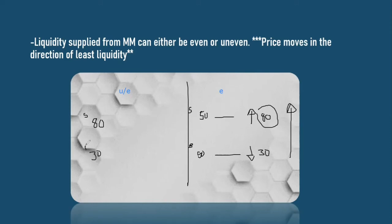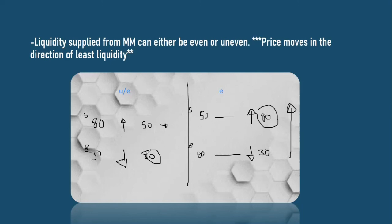Now let's flip it. Here we want to buy because there's available sell-side liquidity, and here we want to sell because there's available buy-side liquidity — 50 million on each side. The market orders from buyers worth 50 million can be easily absorbed, so price remains where it was. But the 50 million from sellers exceeds the available liquidity, and as a result price drops.